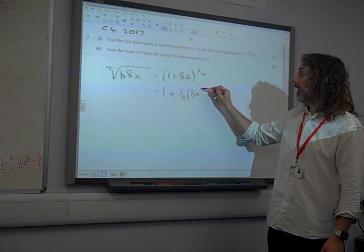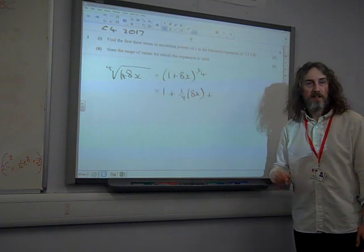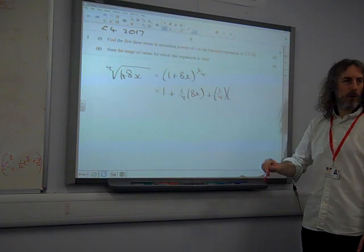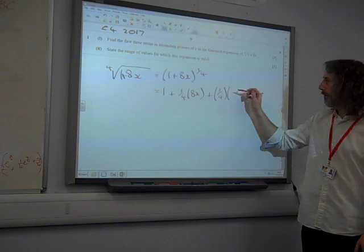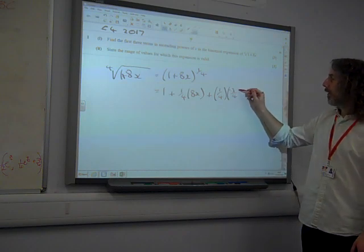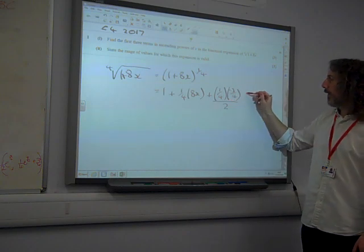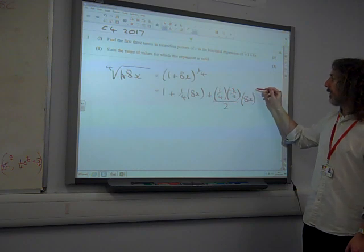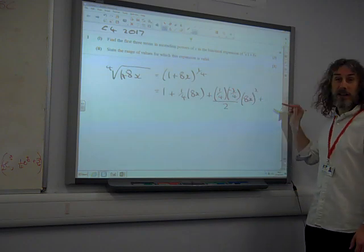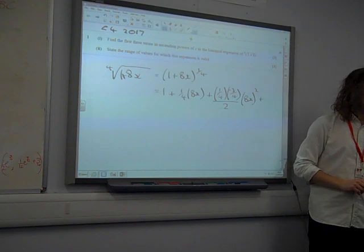plus n times n minus 1, so a quarter take away 1 is minus 3 quarters, over 2 times x squared. And that is all we actually needed. We only needed the first three terms.